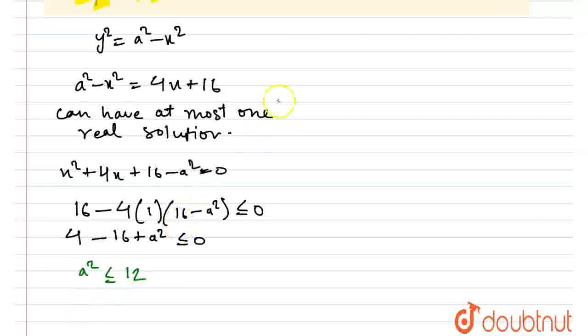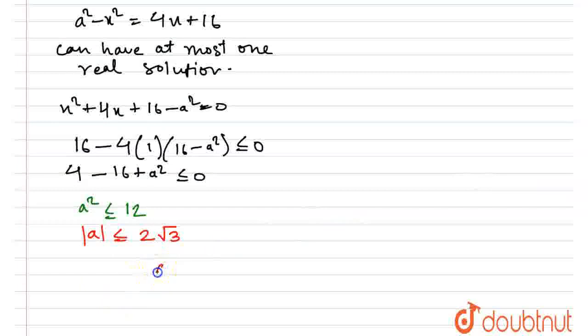Which finally implies A to be less than or equal to 2 root 3, mod A to be less than or equal to 2 root 3. Which makes A to be less than or equal to 2 root 3 and greater than or equal to minus 2 root 3.